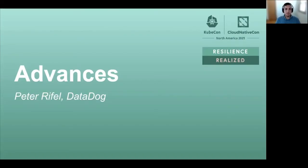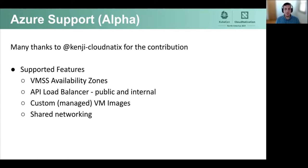My name is Peter Riffel, I'm a software engineer at Datadog working on our internal Kubernetes platform and also a kops maintainer. First is our Azure support. As of kops 1.20, Azure clusters are now supported in alpha. Kops can create virtual machine scale sets in availability zones for each kops instance group. It supports using either public or internal load balancers for the Kubernetes API, custom VM images in instance groups, and clusters can run on shared networking defined outside of kops — for example, shared virtual networks, subnets, and route tables.